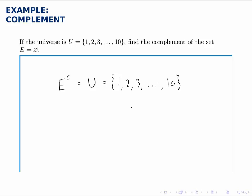So the complement of the empty set is always the universal set. Similarly, the complement of the universal set is always the empty set.